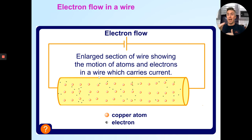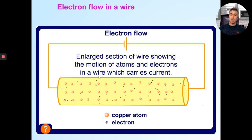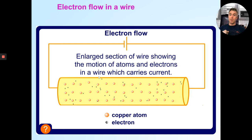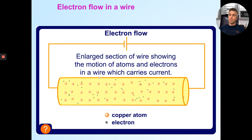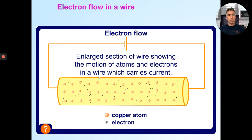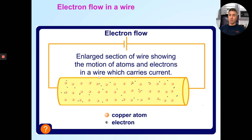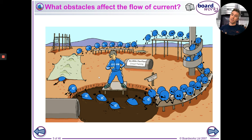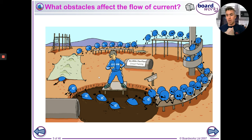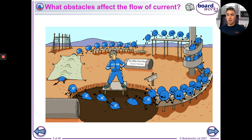If you put more resistance into a wire it reduces the flow of the current. Today we're also looking at what happens to the energy of those electrons, because those electrons need energy to go around the circuit. In this diagram borrowed from Boardworks, the electrons are the blue little people. As they go around the circuit there are different obstacles they go through, and some obstacles are more complicated than others — they're all going around in one loop.